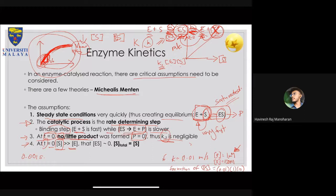Enzymes are expensive, so you use as little as possible to get as much product as possible. Because substrate concentration is way higher than enzyme concentration, the ES complex is almost zero at t = 0. Therefore, total substrate concentration essentially equals the initial substrate concentration S₀. These are all four assumptions in the Michaelis-Menten kinetics equation, and we'll look at how to apply them and how to actually derive the Michaelis-Menten reaction.